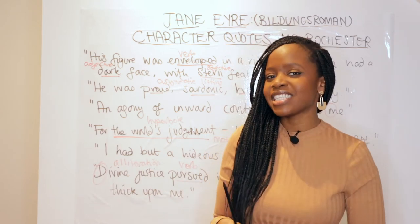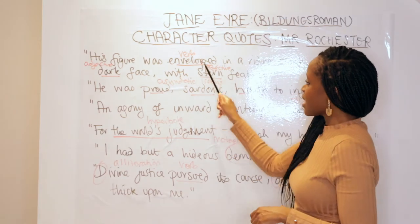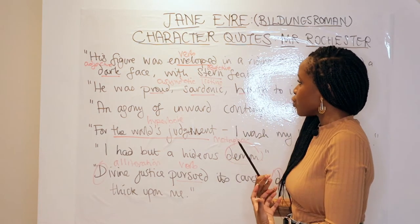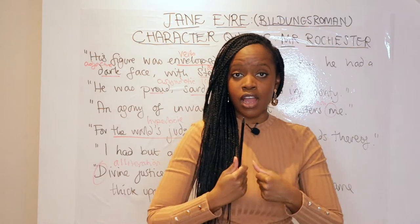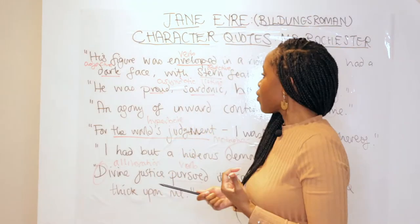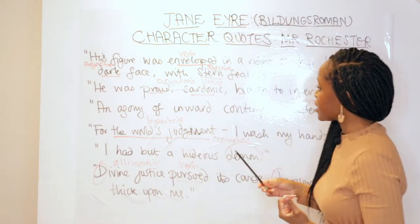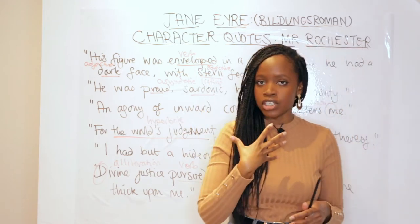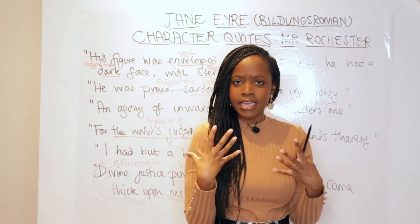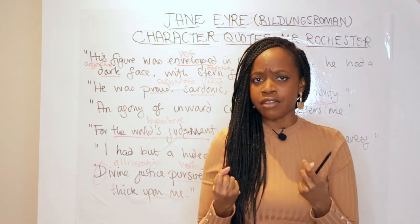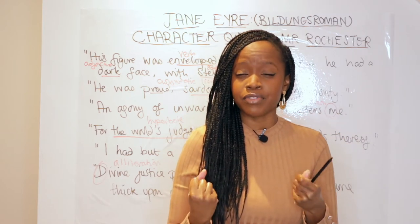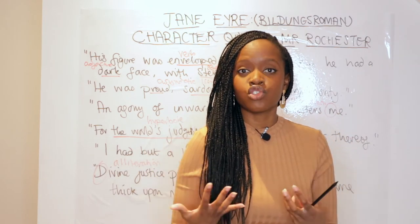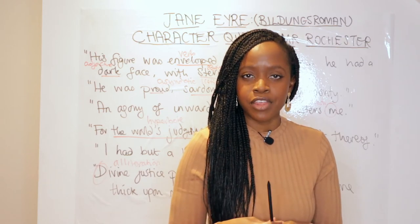The word-level analysis here focuses on the verb 'enveloped,' describing how his figure was cloaked, and the adjectives 'dark' and 'stern' to describe his features. He is presented as a very forbidding figure, but also alluring — the very thing that Jane Eyre is intrigued by and ultimately falls in love with.